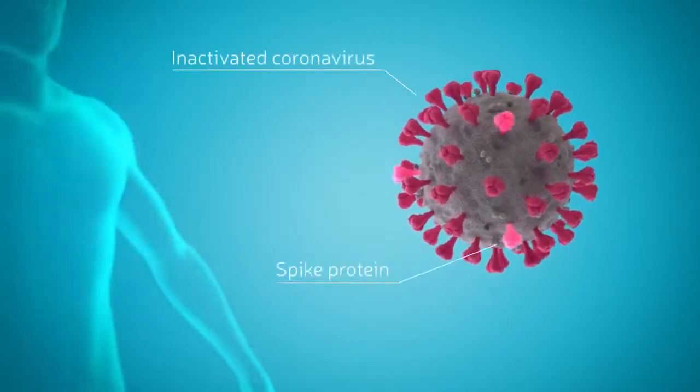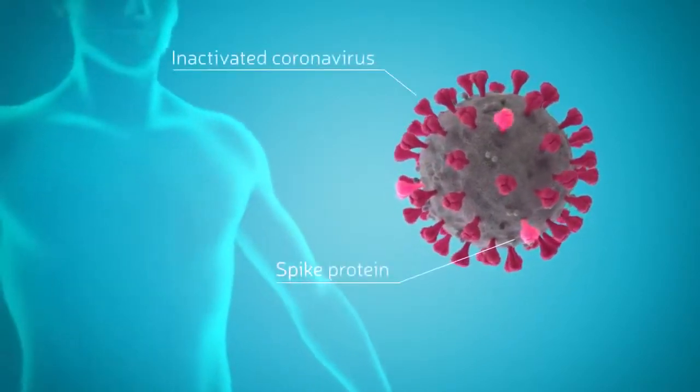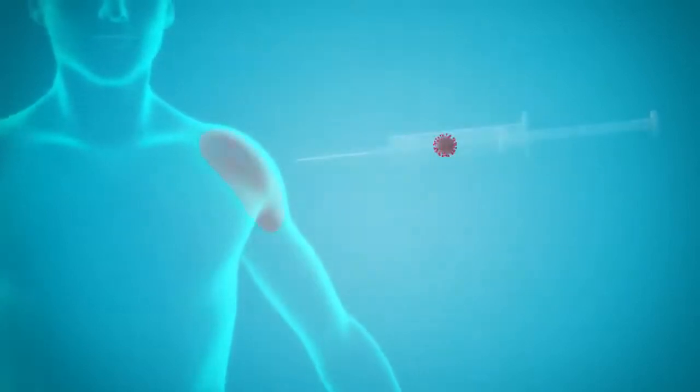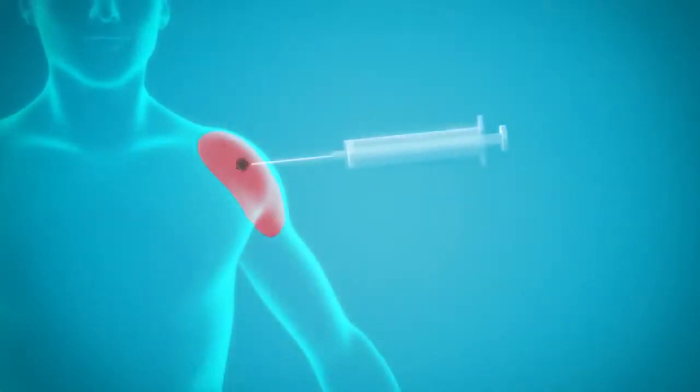With traditional vaccines, the viral proteins, including the key spike protein, are injected into the muscle, usually in the form of inactivated viruses.